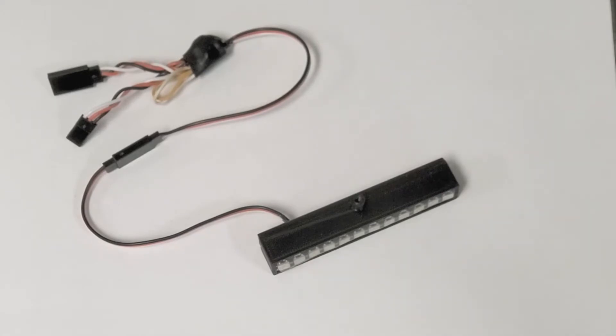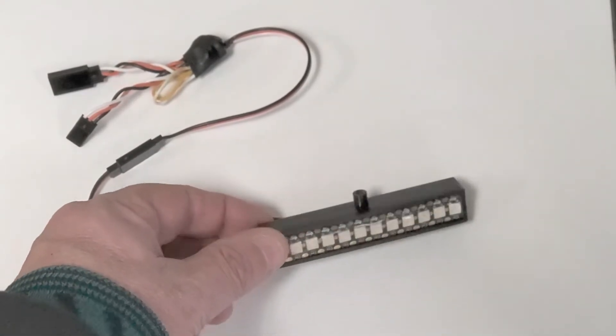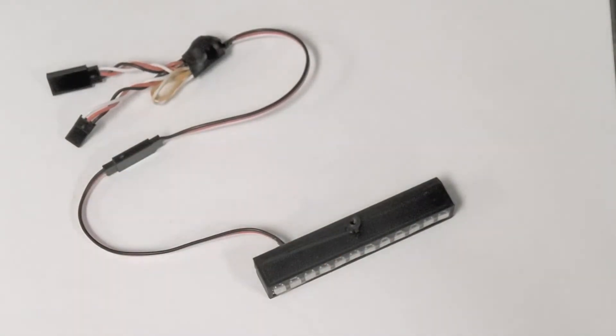This is a rear light bar meant to fit in a Wraith. It mounts with just one screw. In the rear of the cage there's an opening that you can use.